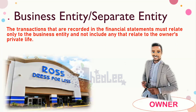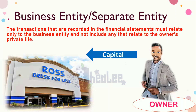For example, if an owner purchases a motor vehicle for personal use, it does not relate to the business and is not recorded in the business books, because that motor vehicle belongs to the owner, not the business. However, if the owner purchased that motor vehicle to be used in the business, then it would be recorded in the business books. When the owner injects money into the business, it is recorded as capital, and if the owner withdraws cash or any other asset for personal use, it results in drawings.